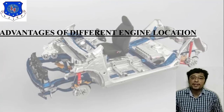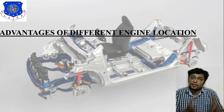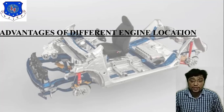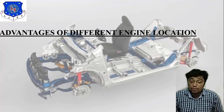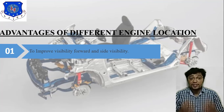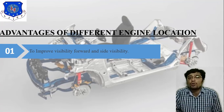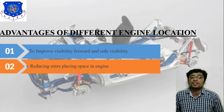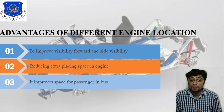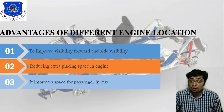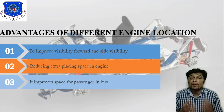Next is the advantages of different engine locations. There are five different types of engine location — front axle, rear axle, and others discussed previously. First advantage: it improves forward and side visibility, and our target is to reduce accidents. If you improve visibility, you improve ergonomics. Second advantage: it reduces extra placing space for the engine. Third advantage: it improves space for passengers in the bus. As per ergonomics, we can set the passenger area or driver seating area accordingly.